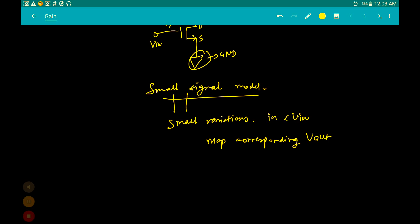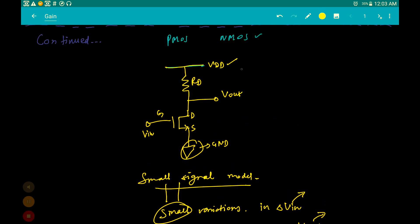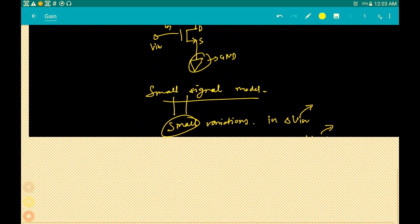Since these variations are really small, we are taking the changes in input and finding out the changes in output. The gain essentially now becomes delta Vout upon delta Vin. If you take VDD over here, this is a constant value, not changing. So delta VDD is equal to 0. Essentially, what is happening is that a voltage of 0 is being applied over here in reality.